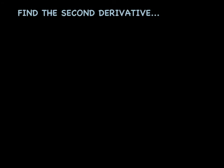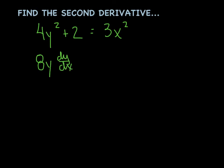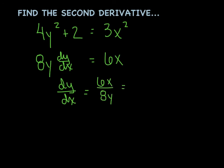On our second-to-last slide tonight, they want us to find a second derivative. By now you've done enough calculus to know that the second derivative is basically the first derivative of the first derivative. So let's take a look at 4y squared plus 2 equals 3x squared — a very friendly function. The first derivative is going to look like this: 8y times dy/dx plus zero equals 6x. Then we solve for dy/dx — I strongly encourage you to do that before going any further. We've got 6x over 8y, and if we reduce, that would be 3x over 4y.